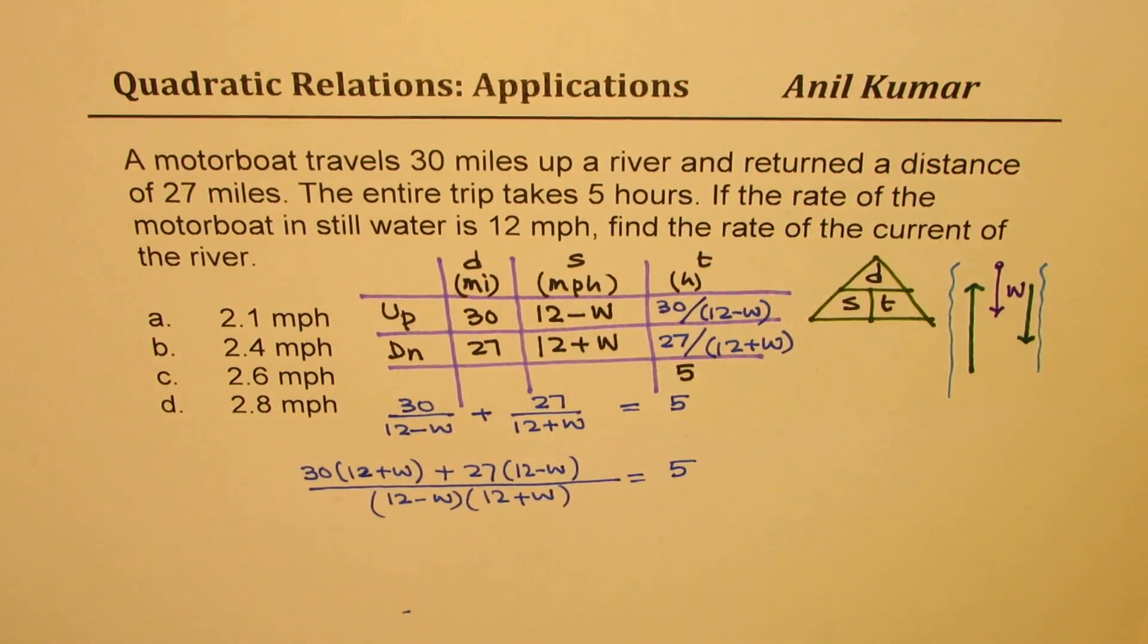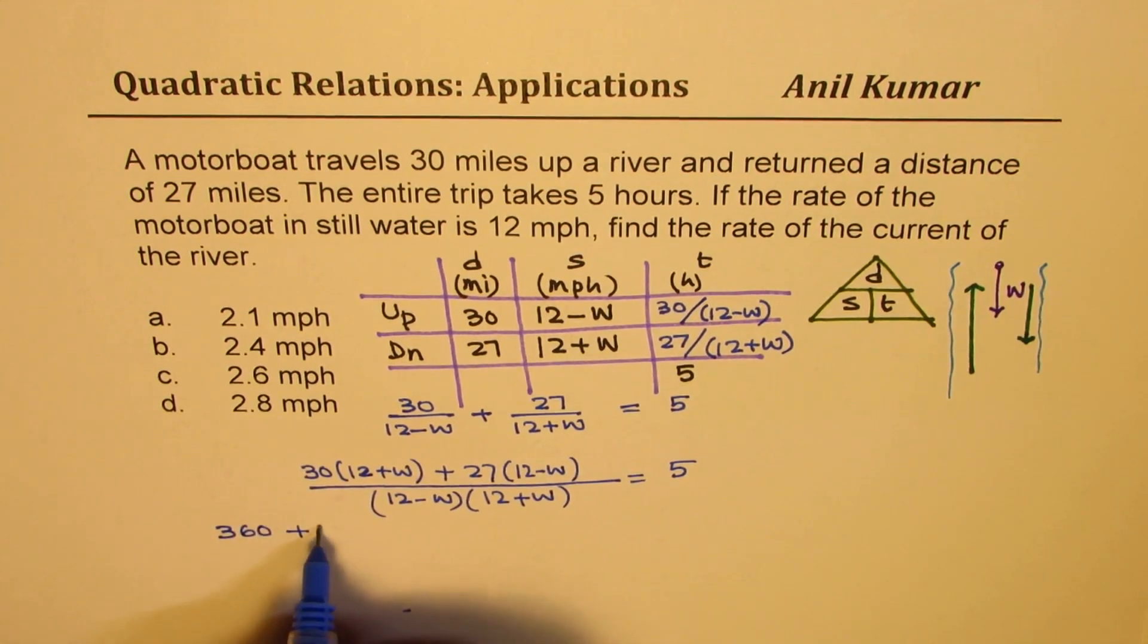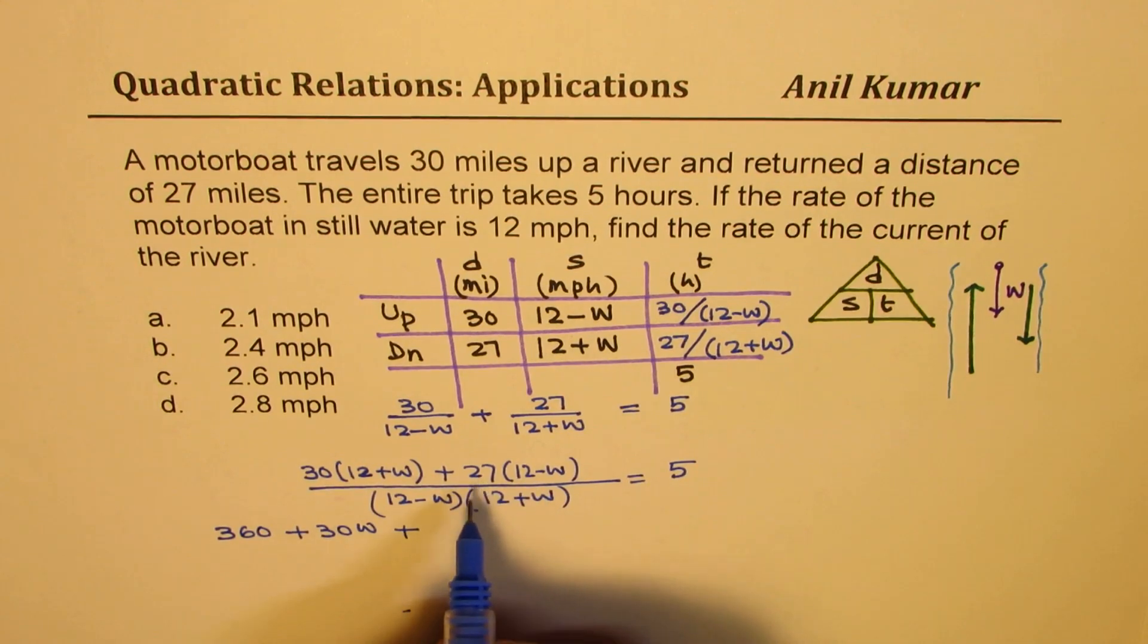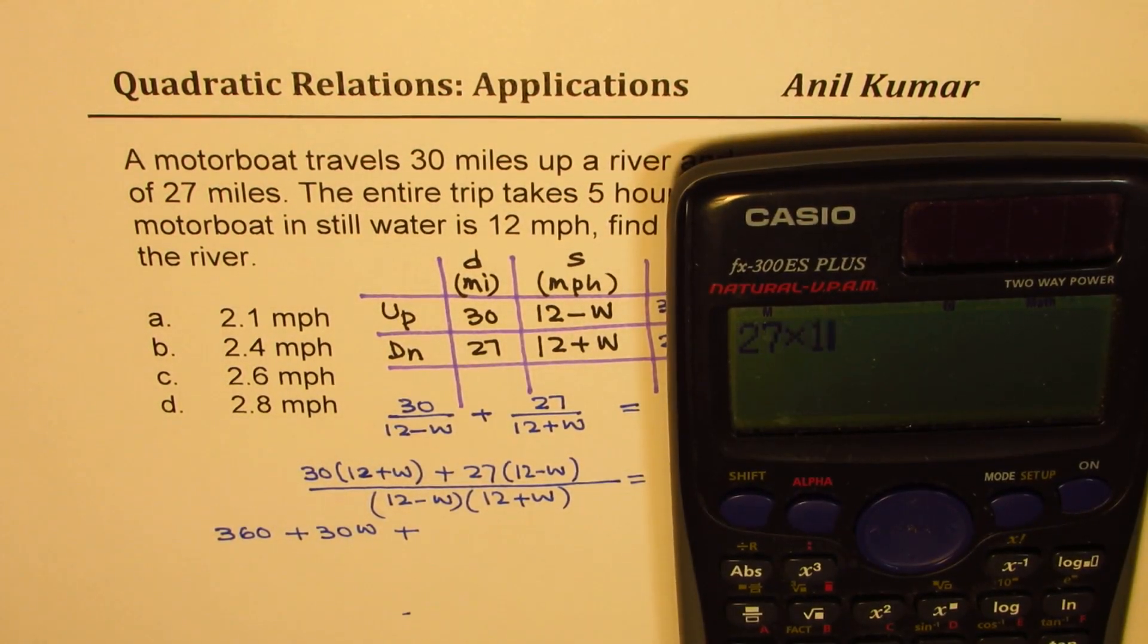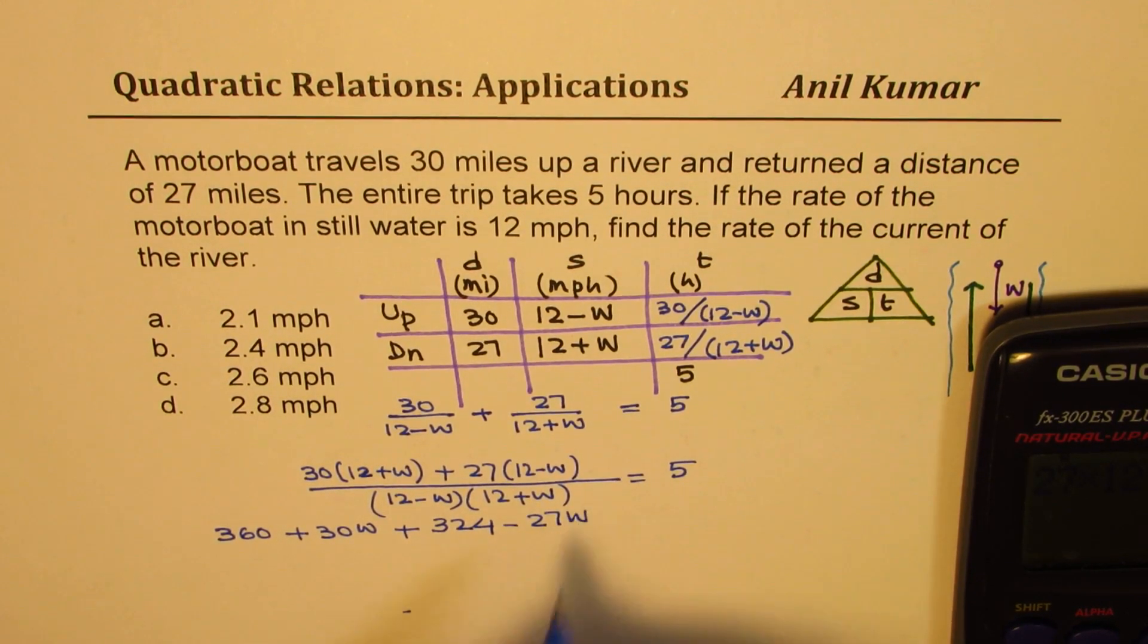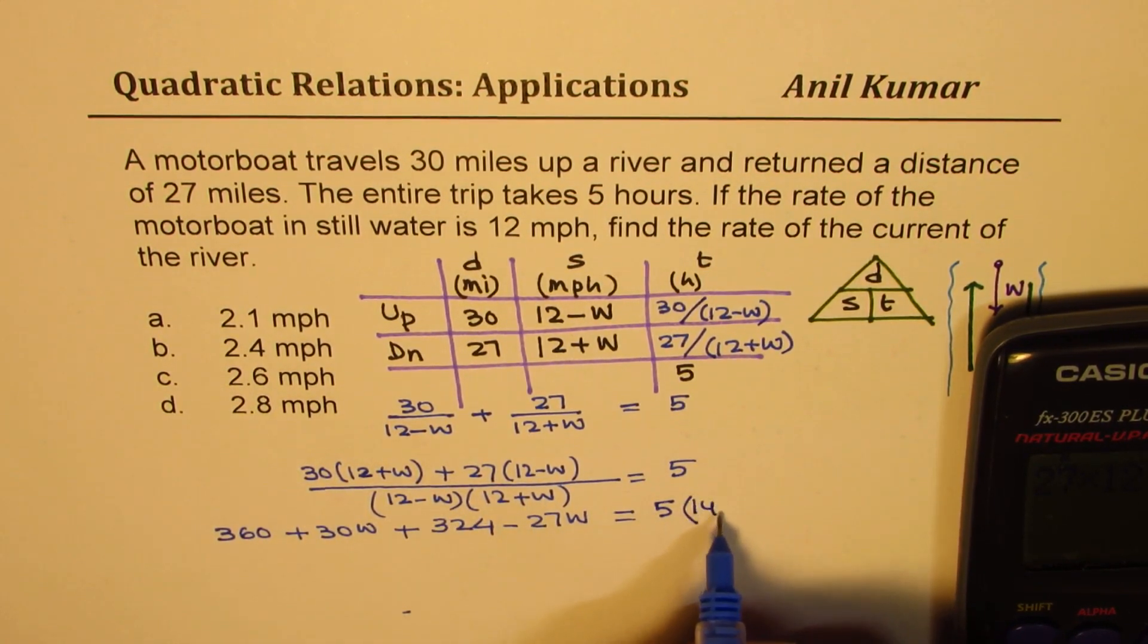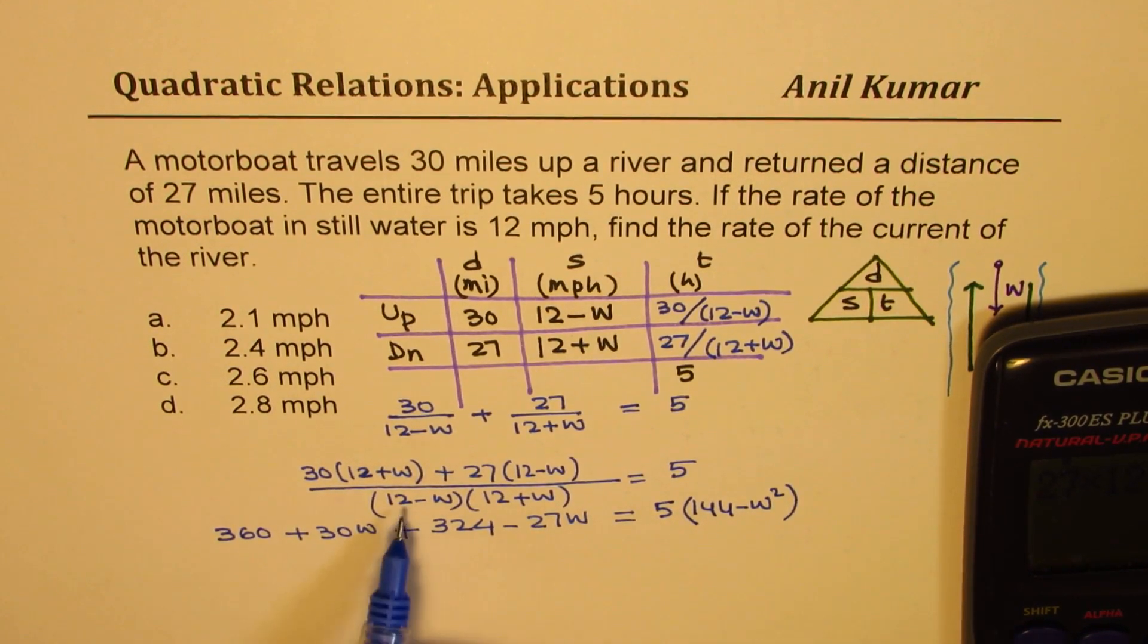Now here you can apply the formula, a square minus b square. Now let's open the brackets, 30 times 12 means 360. You can use calculator actually, so we have 360 plus 30w plus 12 times 27. So let's use the calculator, it's 324 actually, so we'll do 27 times 12 which is 324 minus 27w. Now this term is better to cross-multiply. So we'll do 5 times 12 squared minus w squared. 12 squared is 144 minus w squared. So difference of squares when you multiply, and then you cross-multiply.